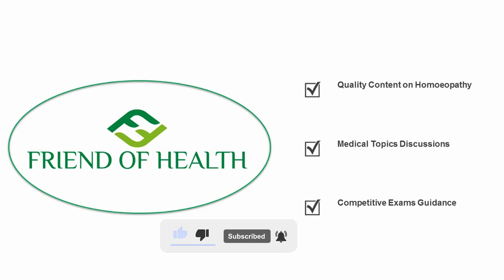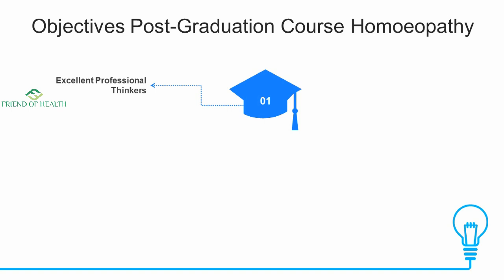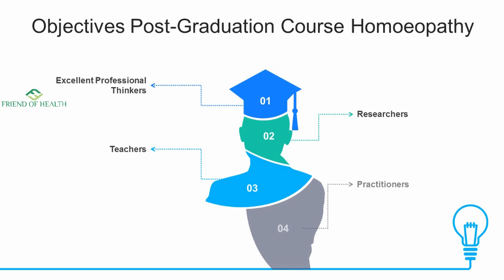The objectives of a post-graduation course in homeopathy, or any AYUSH field, are to create excellent professional thinkers, researchers, teachers, practitioners, and subject experts in the field. These are the main objectives of a postgraduate course, and you may achieve these five points or more when you do an MD course seriously.